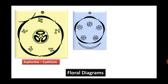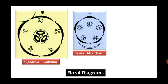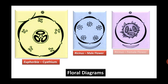Now let us study the floral diagram of the Cyathium of Euphorbia. The tricarpellary gynoecium and stamens are shown here. The bract and mother axis of the Cyathium are also indicated. For the Ricinus male flower floral diagram: the bract, tepals, and stamens are shown, with no ovary present indicating it is a male flower. In the female flower, the tricarpellary ovary is shown along with the bract, three tepals, and the mother axis.